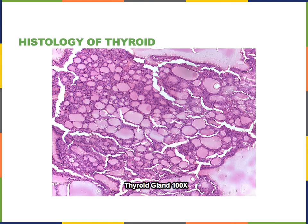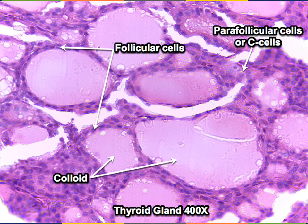Here we see the histology of the thyroid gland, which contains follicles filled with colloid — a storage form of the thyroid hormones. These follicles are lined with a simple cuboidal epithelium of follicular cells. At higher magnification, the follicular cells are activated by TSH to release the hormones T3 and T4 from storage in the colloid within the follicle.